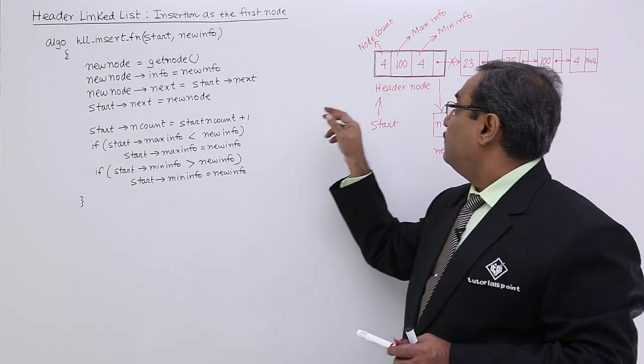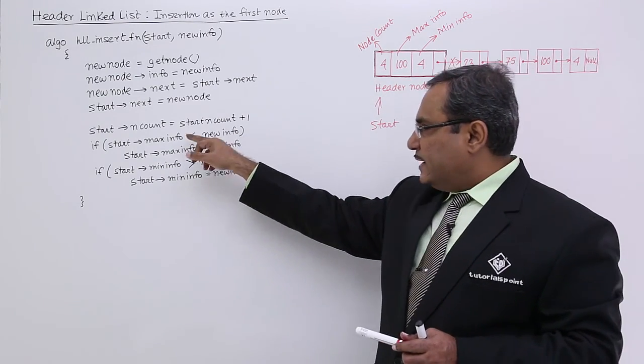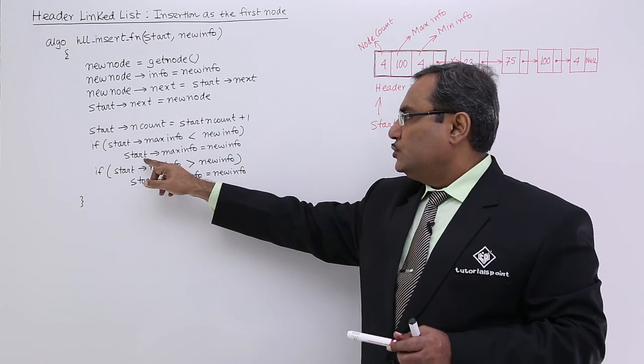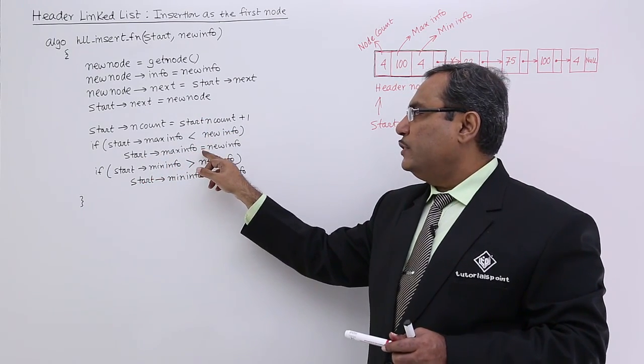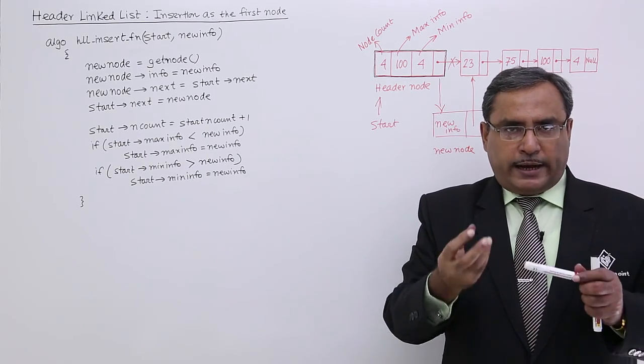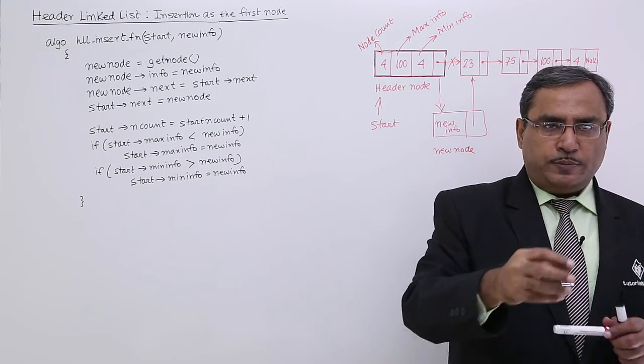If start implies max info, means this part, is less than new info which has been passed as parameter, so start implies max info equals new info. So if I am finding this particular new info is higher than this max value, so it has to be updated.